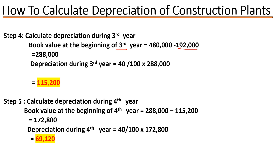Proceeding to the fourth year: the book value at the beginning of the fourth year is the book value at the beginning of the third year minus depreciation during that year — 288,000 − 115,200 = 172,800. Depreciation during the fourth year is 40/100 × 172,800, giving us 69,120.